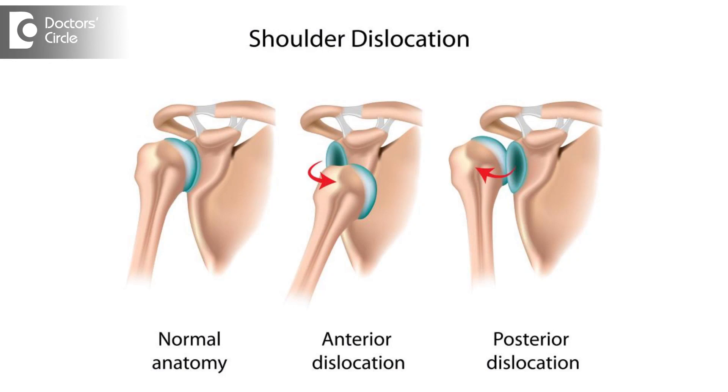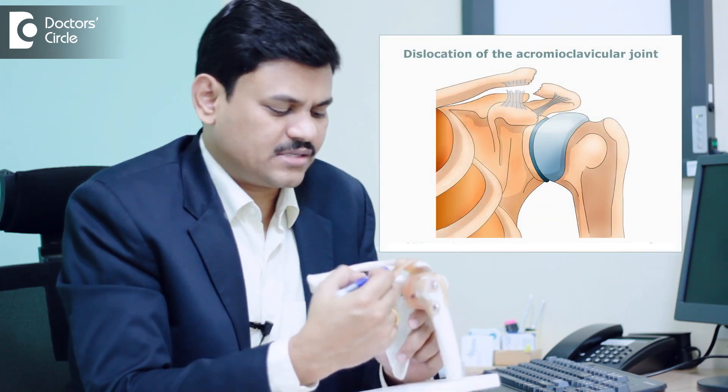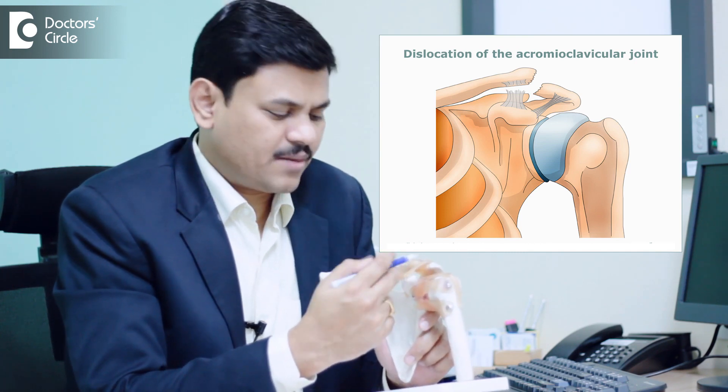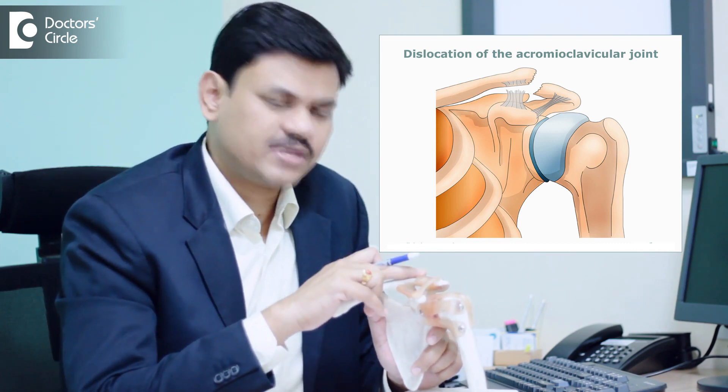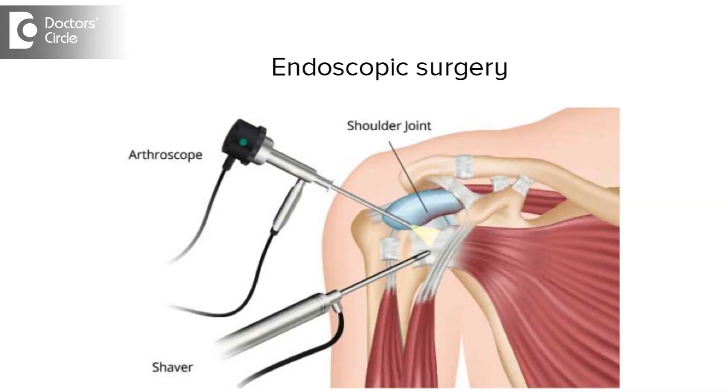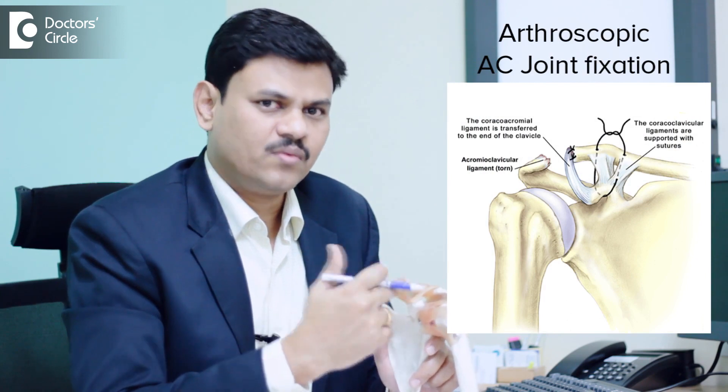Dislocation of the shoulder joint is one of the commonest conditions. Another common dislocation is dislocation of the acromioclavicular joint. If the ligaments and capsule of the joint are broken, the acromioclavicular joint tends to pop up — that is called dislocation of the acromioclavicular joint. If reduced back and held for a few weeks, the ligaments tend to heal. Patients with complete dislocation of the acromioclavicular joint need an endoscopic surgery or it can be managed openly. The open surgery carries a bigger scar and restricted movements, whereas the endoscopic surgery gives several advantages where the joint is brought back under vision and held with threads passed endoscopically over a button. This is called arthroscopic AC joint fixation surgery.